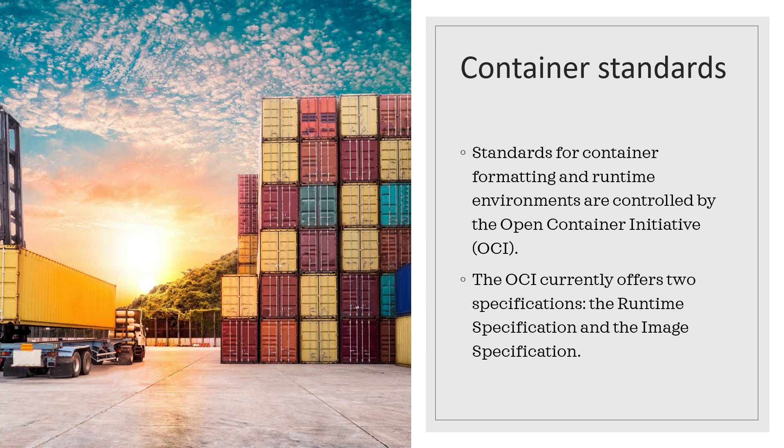Let's also talk about container standards. There are certain standards for containers — for formatting the containers and for the runtime environment. This is controlled by something called OCI, the Open Container Initiative. They offer two types of specifications that we should comply with. Tools like Docker and Kubernetes all comply to these OCI standards. There are specifications in two areas: the runtime specification, which defines how the runtime for a container should look, and the image specification, which defines how the immutable static image that spawns the container should look.